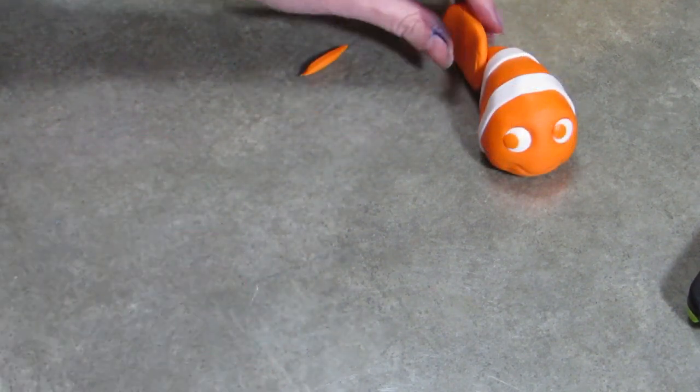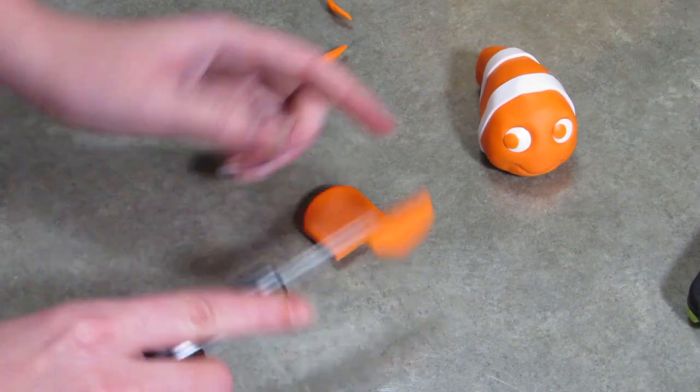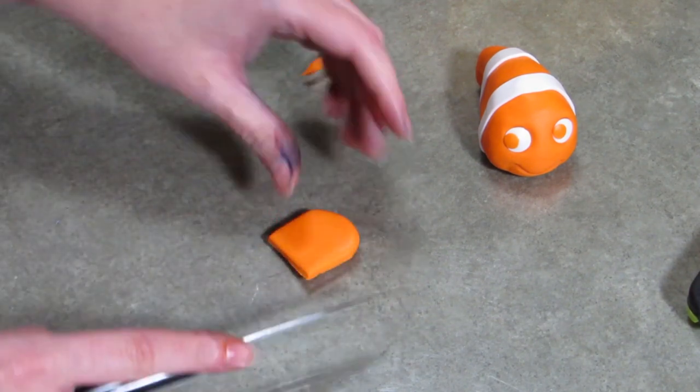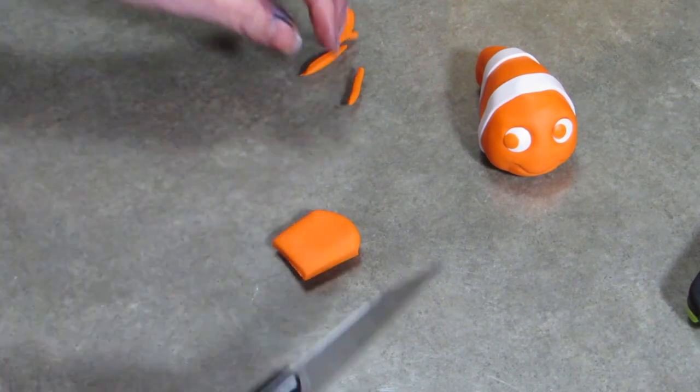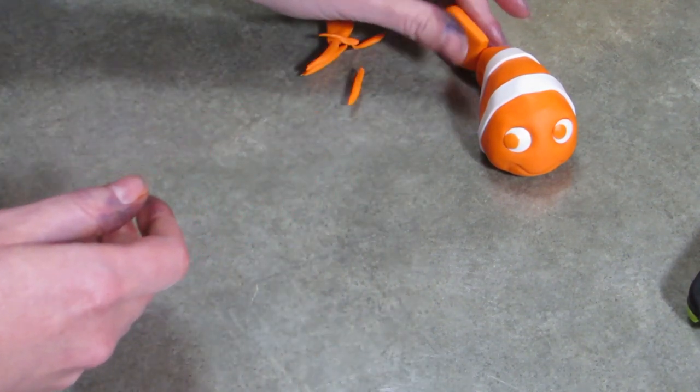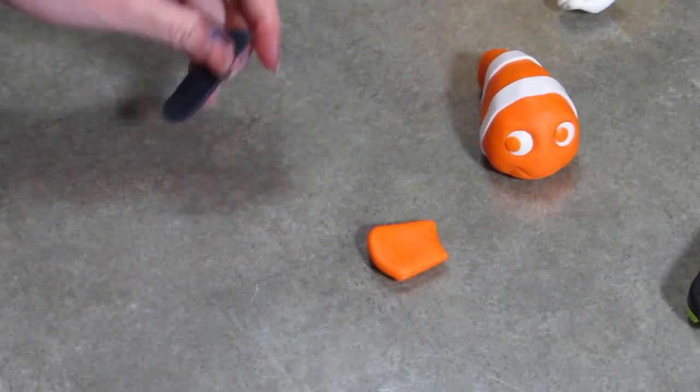This orange wedge is going to become his tail. It is maybe a quarter of an inch thick, and you want the height of the tail to be about the same height of his body. His tail comes straight out of his body. Remember I said before, don't taper down in the end where his tail would be. Make sure it has height. That's why.